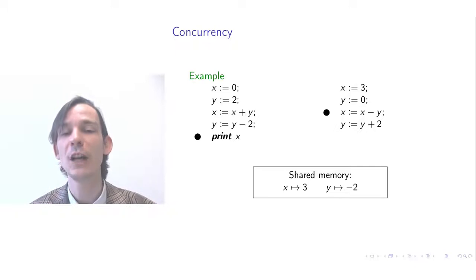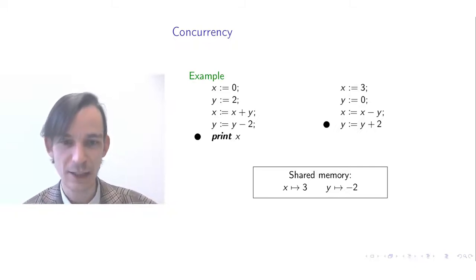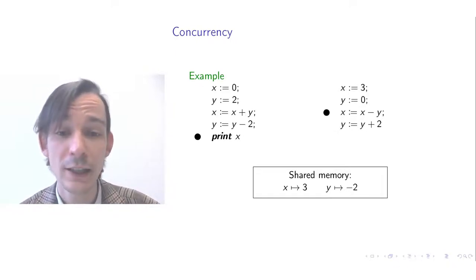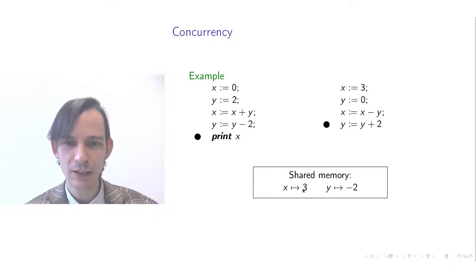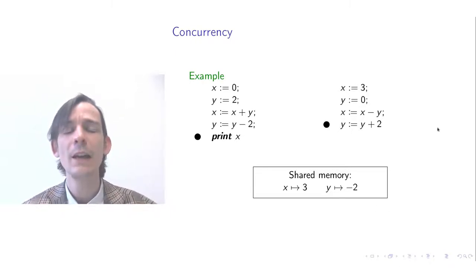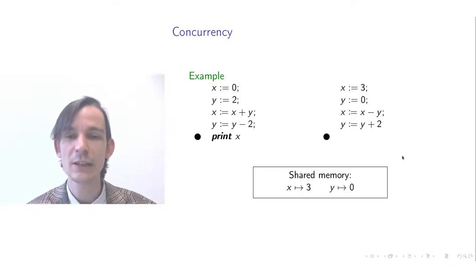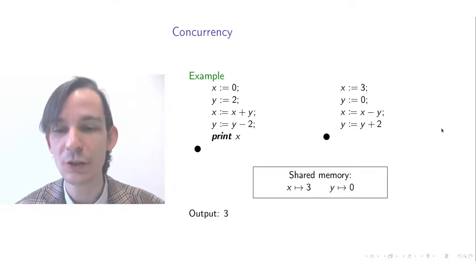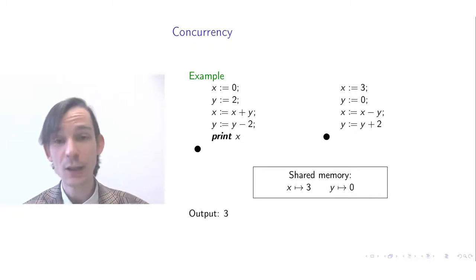So the process on the right then executes x = x − y, but y is now −2, so x should become 5. There is an error on the slide here — it should print 5, not 3 as shown. Then y is assigned and the process prints. The output should now be 5.